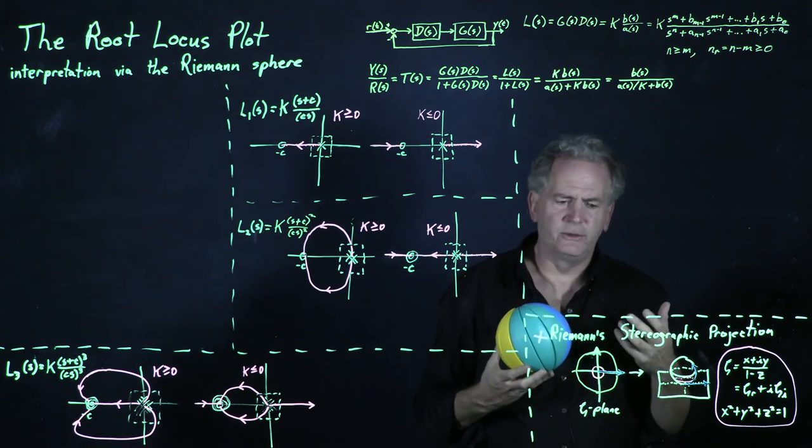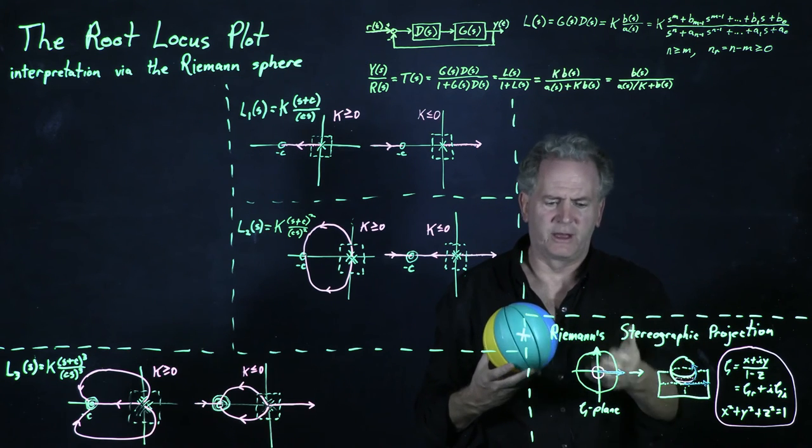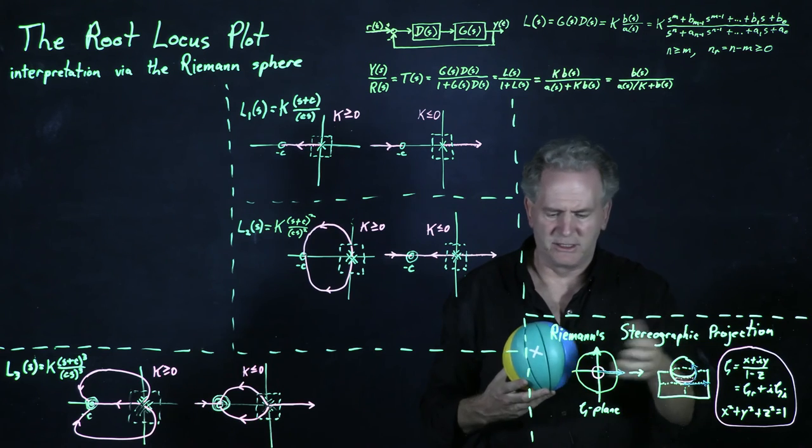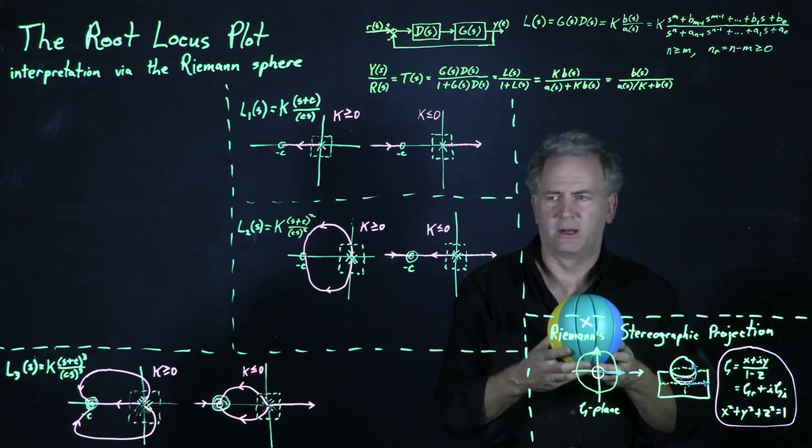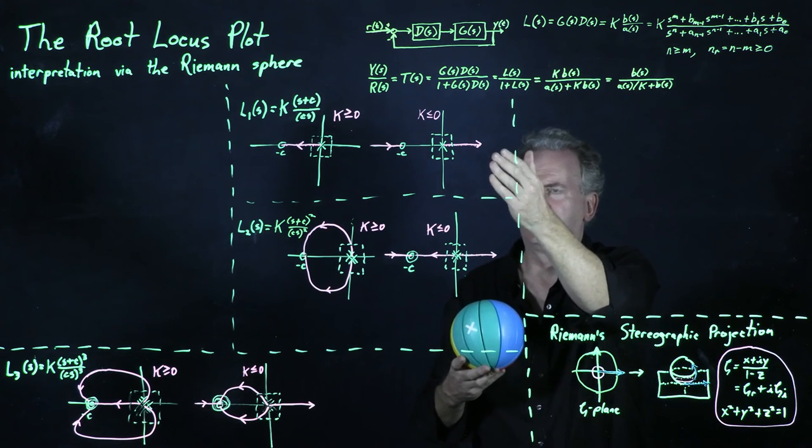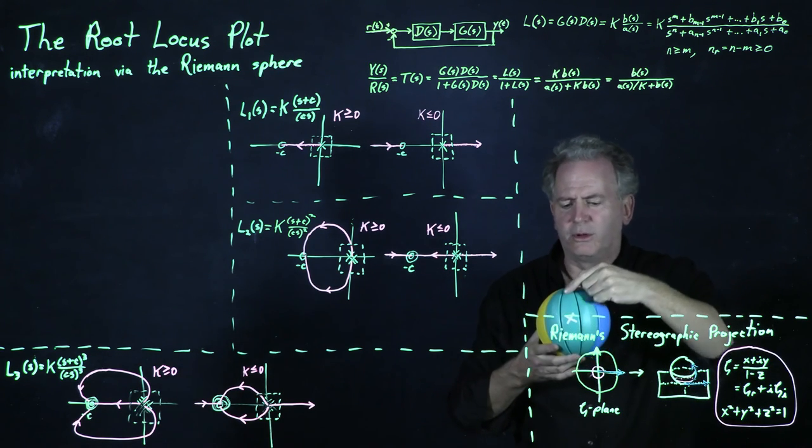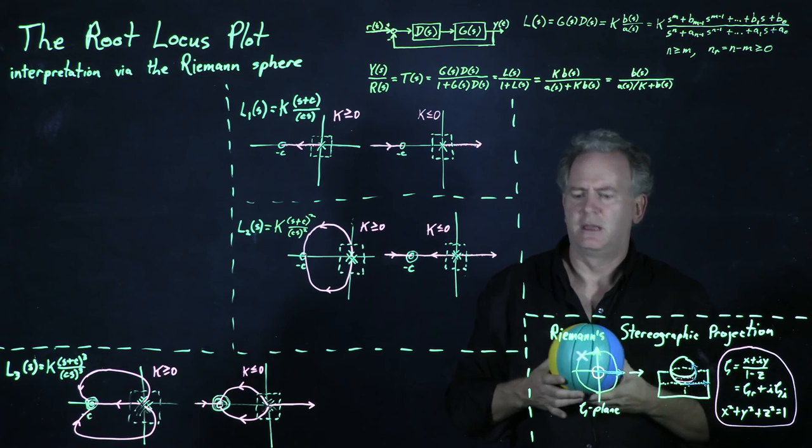So if you're ever confused about the behavior of the complex plane far from the origin, Riemann's stereographic projection onto the sphere helps you to solve the problem. And if you see a crazy behavior like this, it's actually quite smooth.